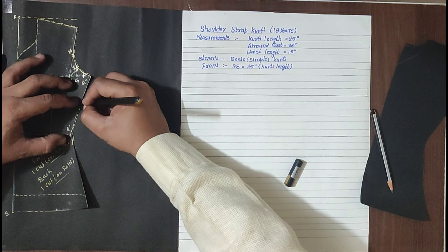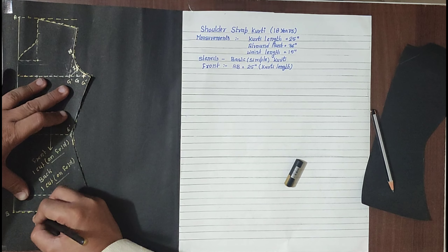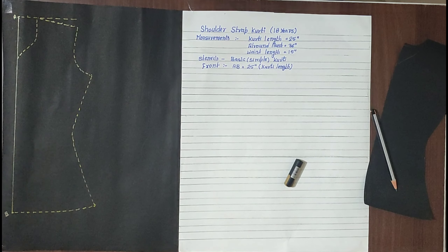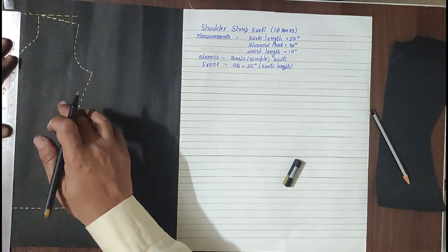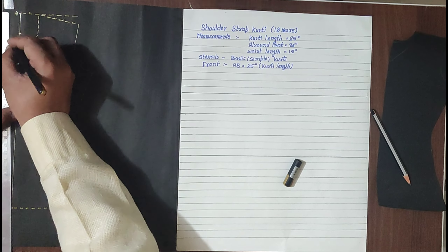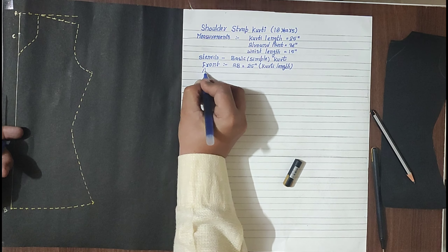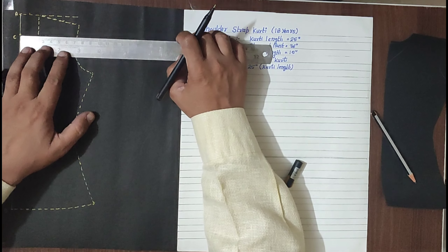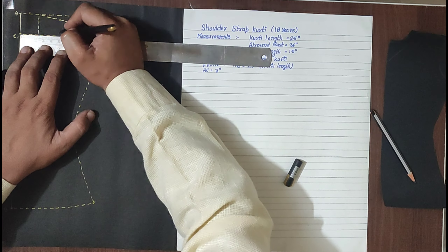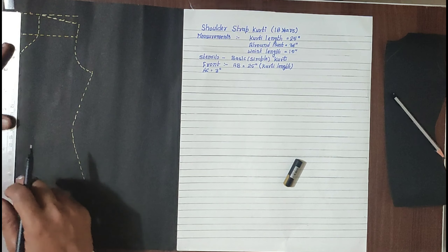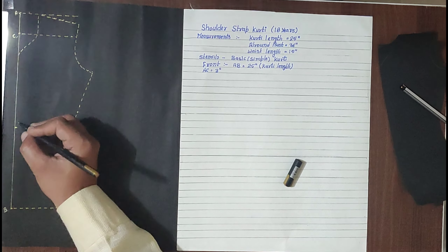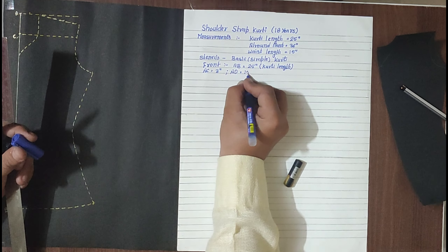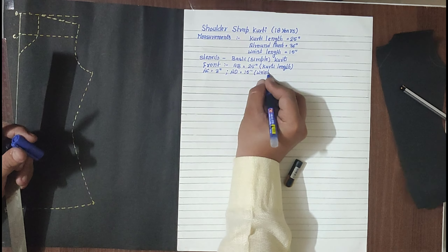We will just draft it. If you do not have the stencil, you can draft the kurti yourself. We will mark a point C where AC is equal to 3 inches — that is the strap length at the front. We will square out an imaginary line from here. Then we will mark point D where AD is equal to 15 inches, equal to the waist length.